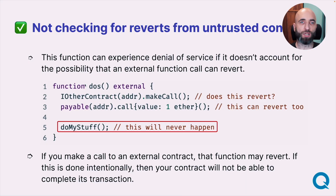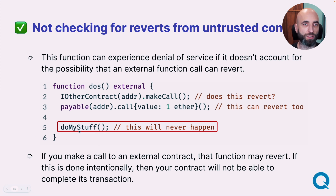Not checking for reverts from untrusted contracts is quite serious. If you have a function that makes calls to external contracts, and any of those calls are reverted, then anything after them — like an important function on a later line — might never execute. So either change the order of your functions or add more logic to ensure the important operations actually happen.